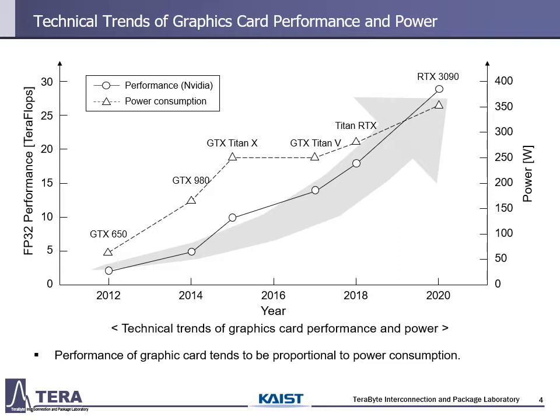This is the technical trends of graphics card performance and power. It shows the performance increases as time goes on due to demand for high computing performance systems. Additionally, power consumption of graphics cards tends to follow computing performance. The increasing power consumption causes thermal issues of graphics cards.